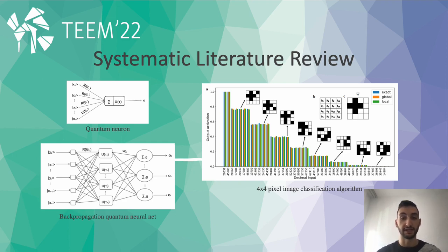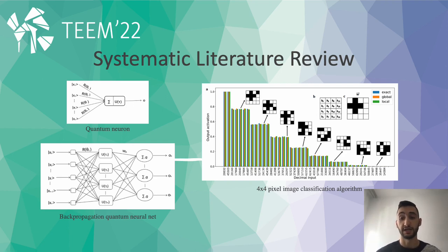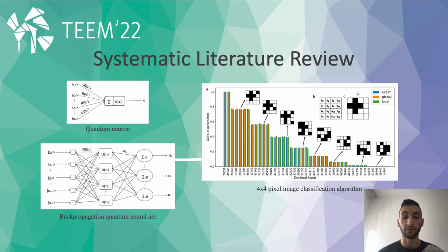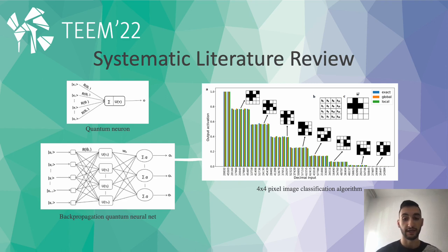Some of the main types of algorithms found are implementations of classical machine learning or deep learning algorithms such as support vector machines, k-nearest neighbor models, or quantum neural networks. Here we can see a quantum neuron, a backpropagation neural network, and an application of a neural network classifying 4×4 pixel images.